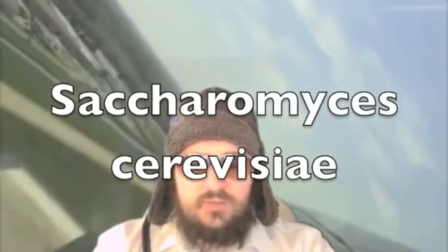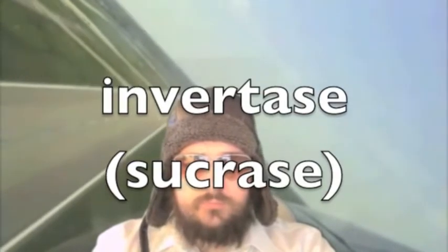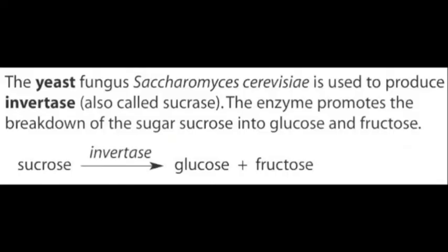The yeast fungus Saccharomyces cerevisiae is used to produce invertase. The enzyme promotes the breakdown of the sugar sucrose into glucose and fructose. Sucrose, via invertase, goes to glucose and fructose.